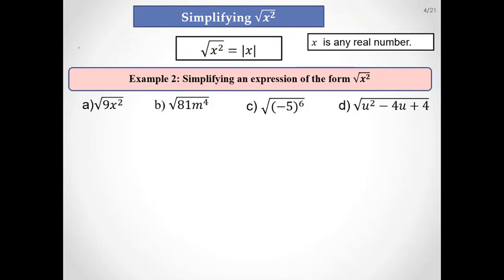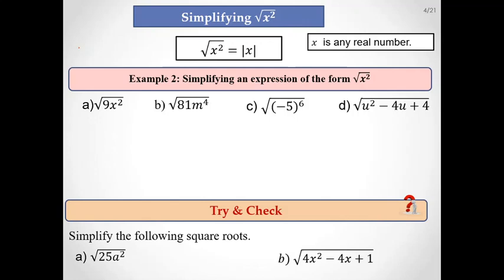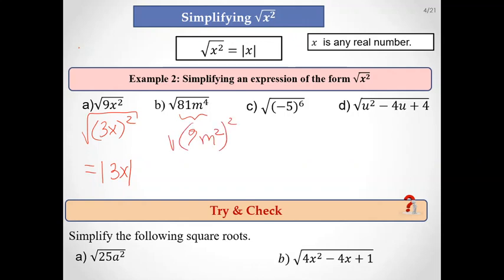Let's simplify some expressions. The square root of 9x² is clearly the square of 3x, so the answer is the absolute value of 3x. For the square root of 81m⁴, this is the square of 9m², so it's the absolute value of 9m² — and since m² is always non-negative, we can write it as 9m².